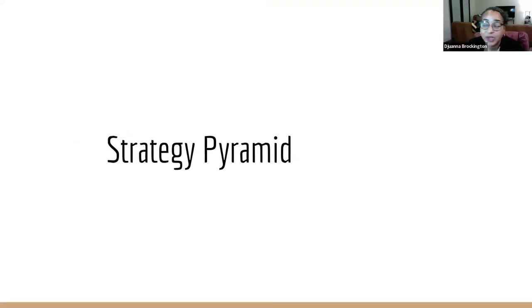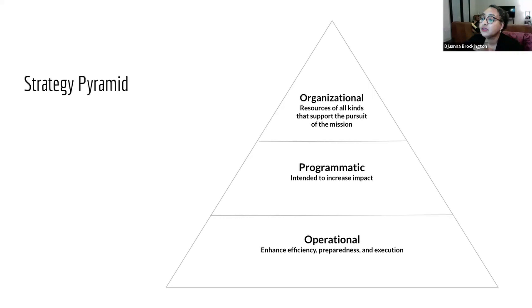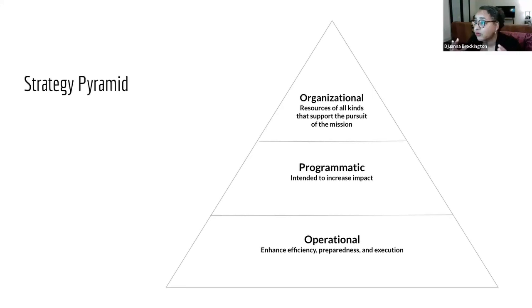Here's another tool: the strategy pyramid. Pyramids work with the base holding everything up. The operational level — the body — enhances your efficiency, preparedness, and execution. The programmatic level is the heart and meat of what you do — your impact. The organizational level — the head — includes resources, supporters, donors, and the board: anyone who supports your pursuit of your mission. When thinking about strategy, identify which area needs shoring up the most — is it the operational, the programmatic, or the organizational?